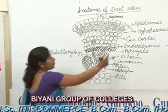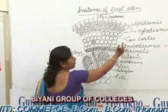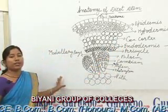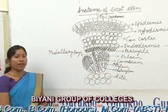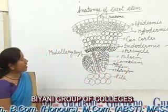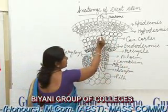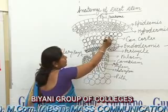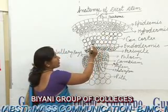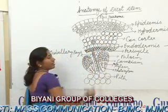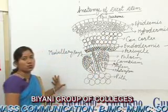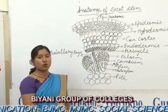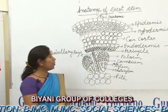Next to hypodermis is general cortex. General cortex is made up of parenchyma cells having intercellular spaces. The general cortex also has resin canals. The function of general cortex is to store food.